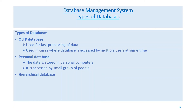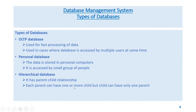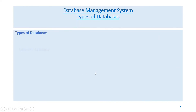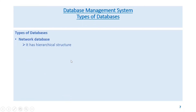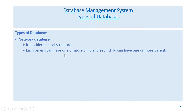Personal database — the data is stored in personal computers and is accessed by a small group of people. Hierarchical database — has a parent-child relationship where each parent can have one or more children but each child can have only one parent. Network database — has a hierarchical structure where each parent can have one or more children and each child can have one or more parents.